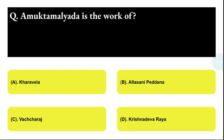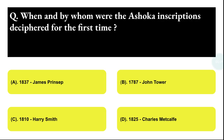The first question: options are A) Garavilla, B) Al-Sani Baddhan, C) Vajjaraj, and D) Krishna Dev Raya. The correct answer is option D, that is Krishna Dev Raya.